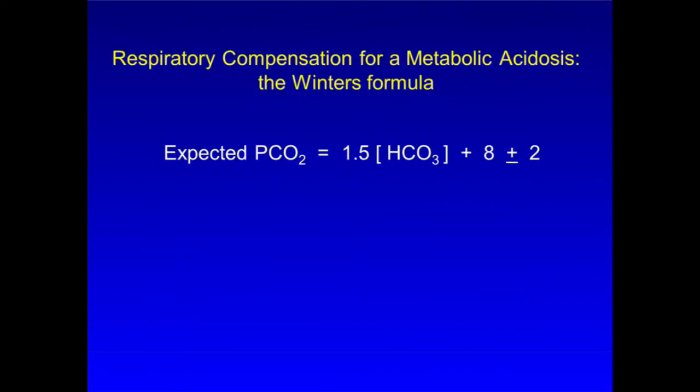As you may know, there is a helpful formula that can be used when a metabolic acidosis is involved. It's called the WINTERS formula, and it says that in a metabolic acidosis with appropriate respiratory compensation, the expected PCO2 in millimeters of mercury is 1.5 times the serum bicarbonate in mill equivalents per liter plus 8 plus or minus 2.